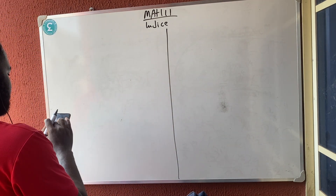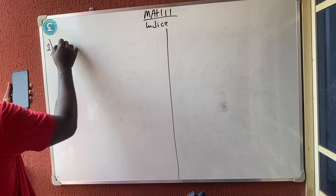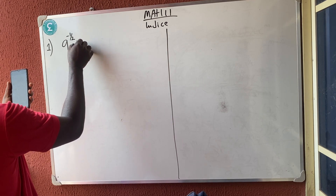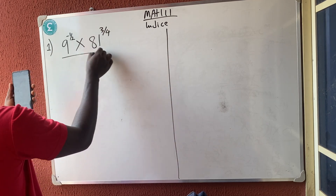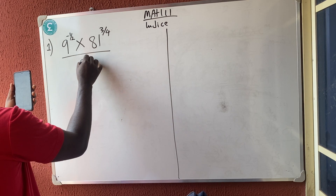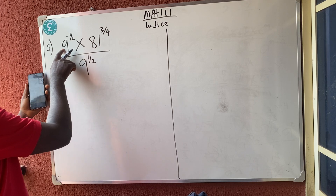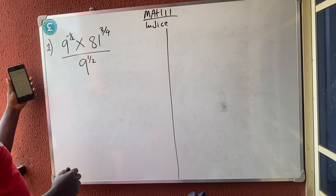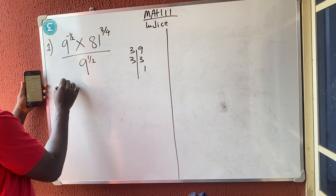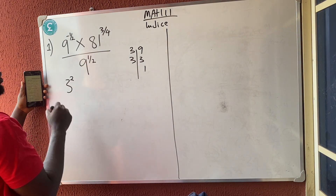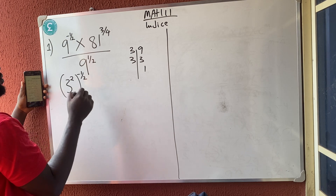The first question we're going to look at is: 9 raised to power minus one over two, times 81 raised to power three over four, all over 9 raised to power one over two. Now since this is a 9 and this is a 9, let me reduce everybody. If I reduce 9, I have 3 times 3, so I'm dividing with 3 and they are two in number. I'll put all raised to power minus one over two times...